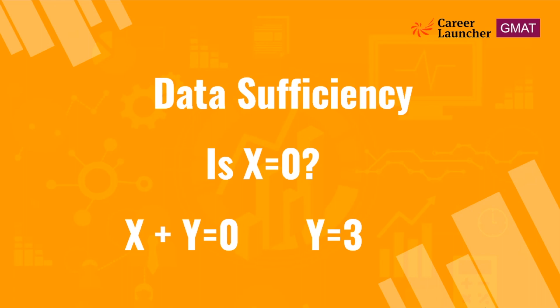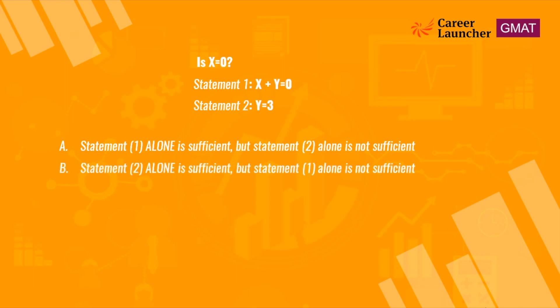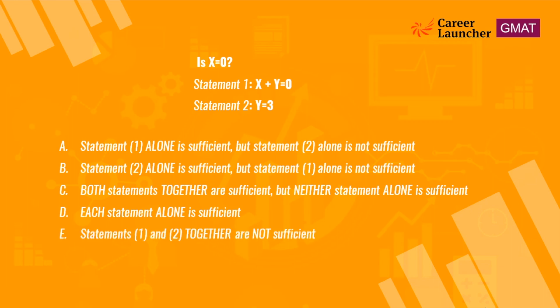Let's take a look at how answer choices will be presented. Select A if statement 1 alone is sufficient but statement 2 alone is not. Select B if statement 2 alone is sufficient but statement 1 alone is not. Select C if both statements together are sufficient but neither alone is sufficient. Select D if each statement alone is sufficient. Select E if statements 1 and 2 together are not sufficient.